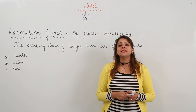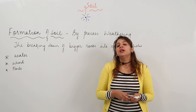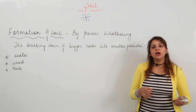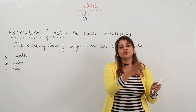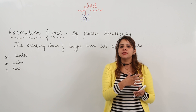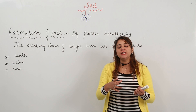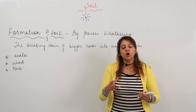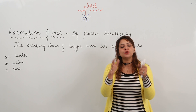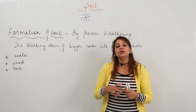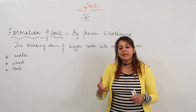We are going to start with how soil was formed. Long ago, the surface of the earth was covered with huge rocks. Then, due to earthquakes, those bigger rocks were broken into smaller pieces. Volcanic eruptions also occurred, and due to volcanic eruptions, rocks were thrown to different places far away from each other.